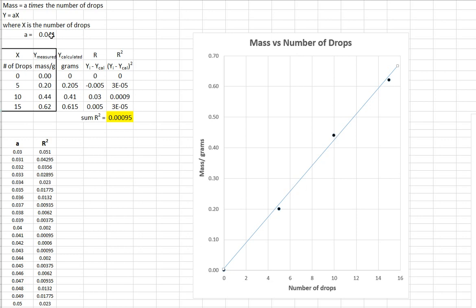So with a equal 0.041, the calculated mass is shown in this column. What I've done is I'm multiplying the number of drops times a. And the difference between the measured and the calculated is called the residual. And if your a is pretty good, some of the values will be negative, some will be positive. And if you square the residual, r squared, you'll always get a positive number and you sum them up. And that's called the sum of the residual squared.